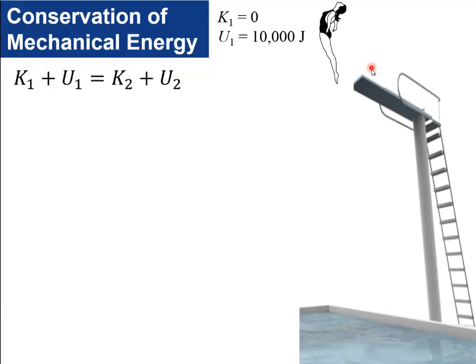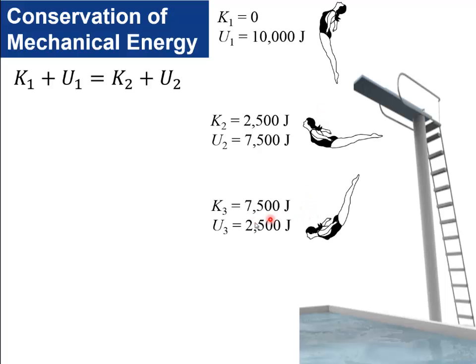So example, this diver just steps off the diving board very gently so that her kinetic energy, her speed is zero, so her kinetic energy is zero. But she's high up, she's climbed up this ladder, so she has a potential energy, let's say, of 10,000 joules. As she falls, what happens is that potential energy drops. So a quarter of the way down, she now only has 7,500 joules of potential energy. And correspondingly, she speeds up, and now she has 2,500 joules of kinetic energy. Falls more, potential energy keeps dropping, kinetic energy keeps increasing, but notice that the sum is always the same, it's always 10,000 joules. So the time she gets to the bottom zero height, she's got zero potential energy, and her kinetic energy is up at 10,000 joules.